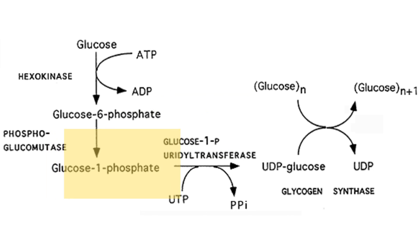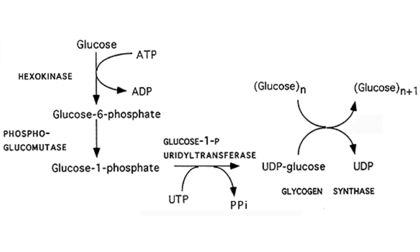The first step: we're going to have glucose attached to a UTP. So glucose-1-phosphate is going to react with the UTP, and it's going to make UDPG. We're also going to create a pyrophosphate, which has a lot of energy in it. It's just two phosphates linked together via an anhydride bond.